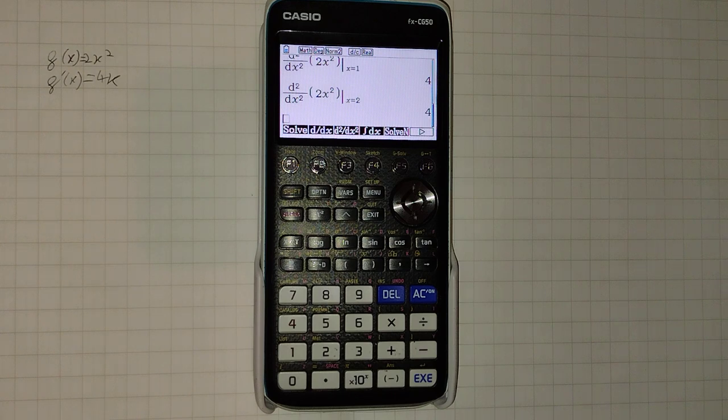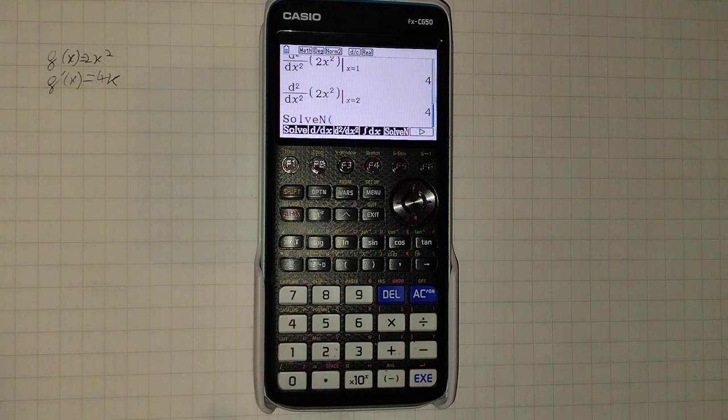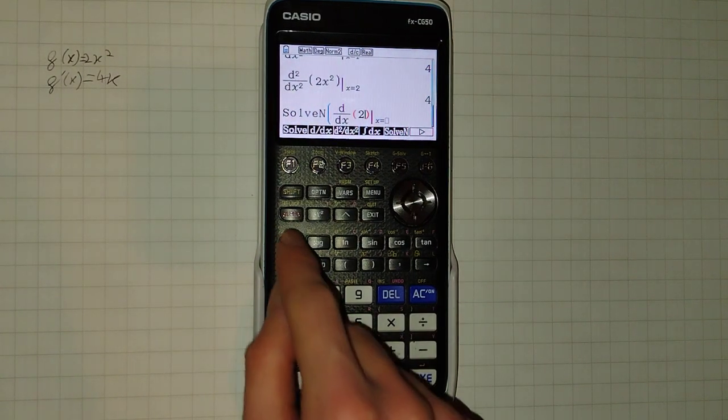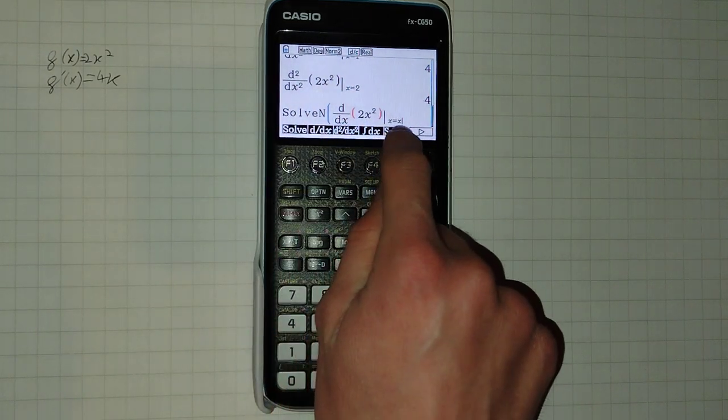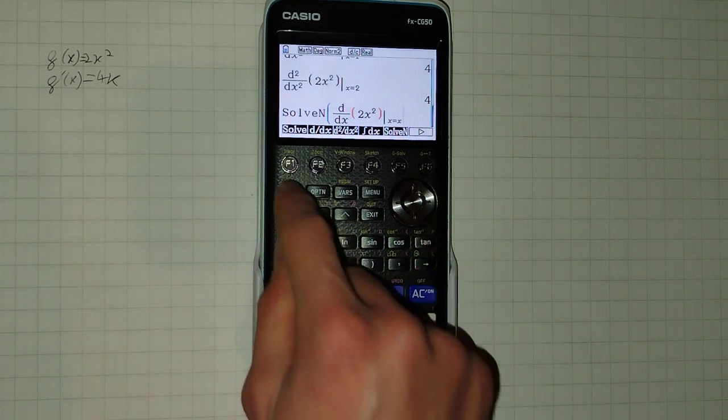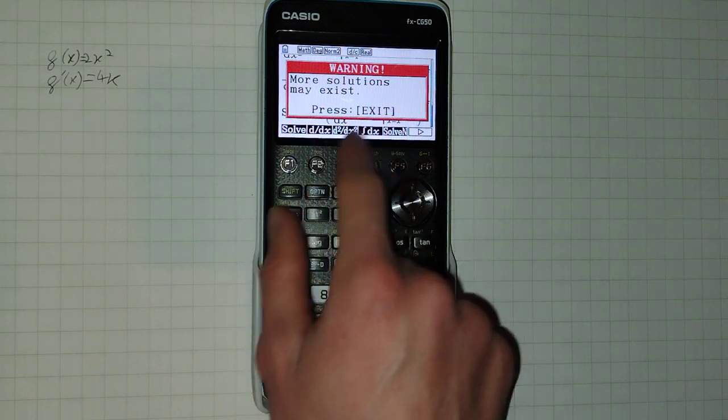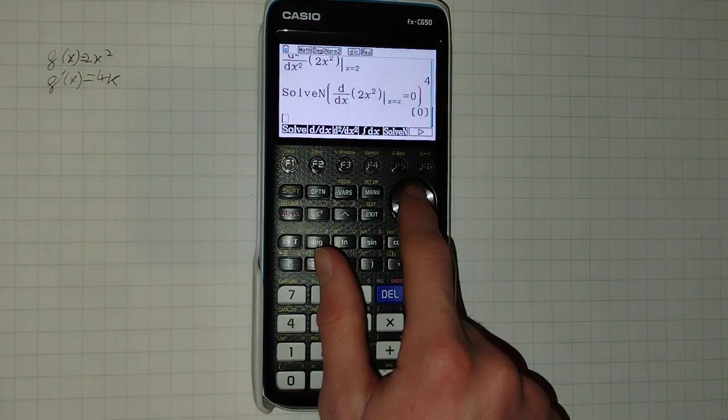This also brings us to another interesting point. We can combine this with the Solve function to solve equations. So we could put in, for example, 2x squared, and ask it to tell us at which value of x does the gradient equal zero. It gives us the typical warning that multiple solutions may exist, and it will output zero. Sure enough, that would give zero.